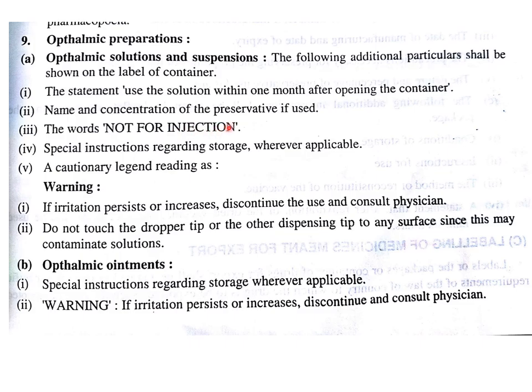To recap, the key label instructions for ophthalmic solutions are: use solution within one month of opening; name and concentration of preservative if used; the words 'not for injection'; special storage instructions; two warnings — 'if irritation persists or increases, discontinue use and consult physician,' and 'do not touch the dropper tip or any other dispensing tip to any surface since this may contaminate the solution.'